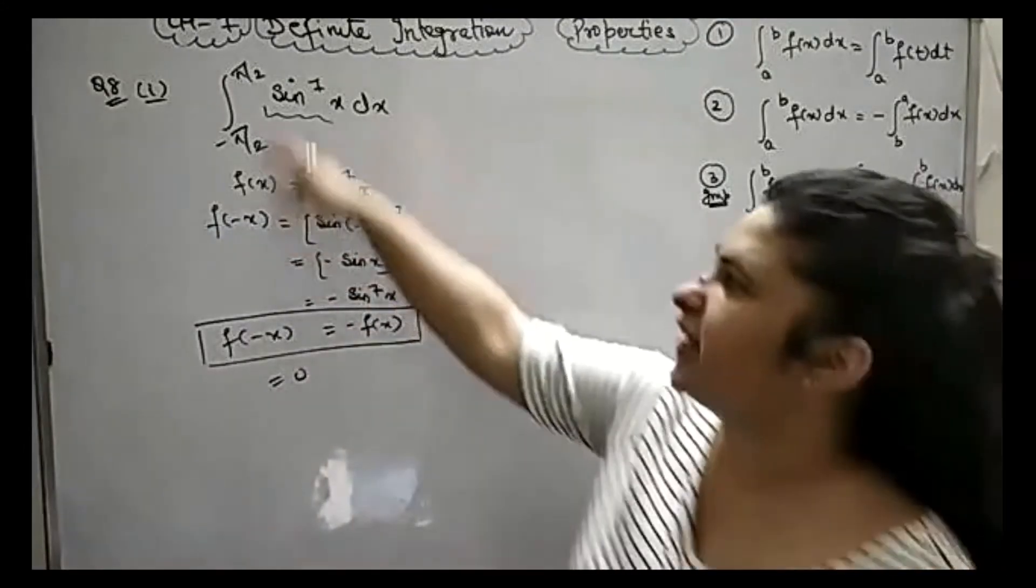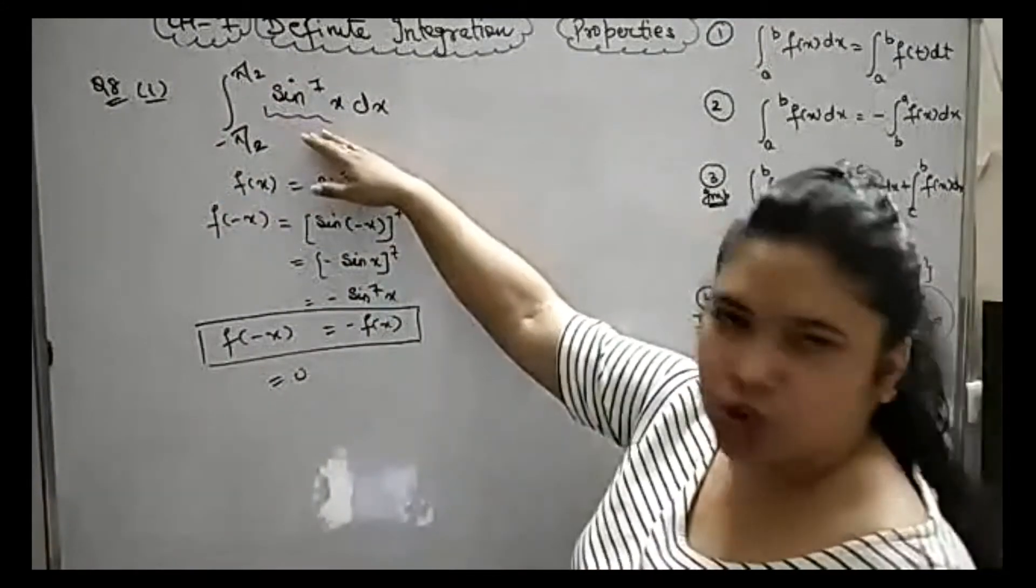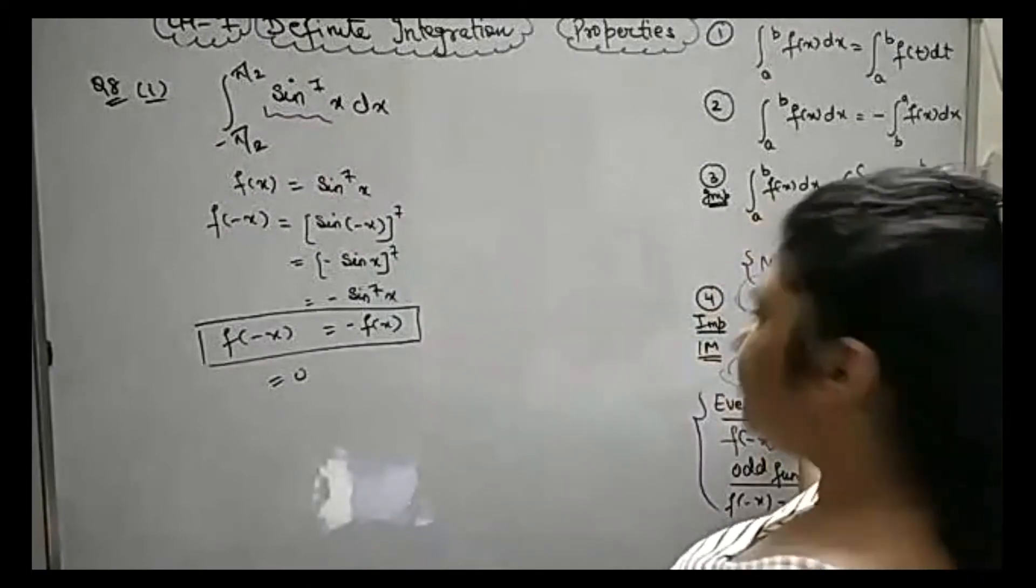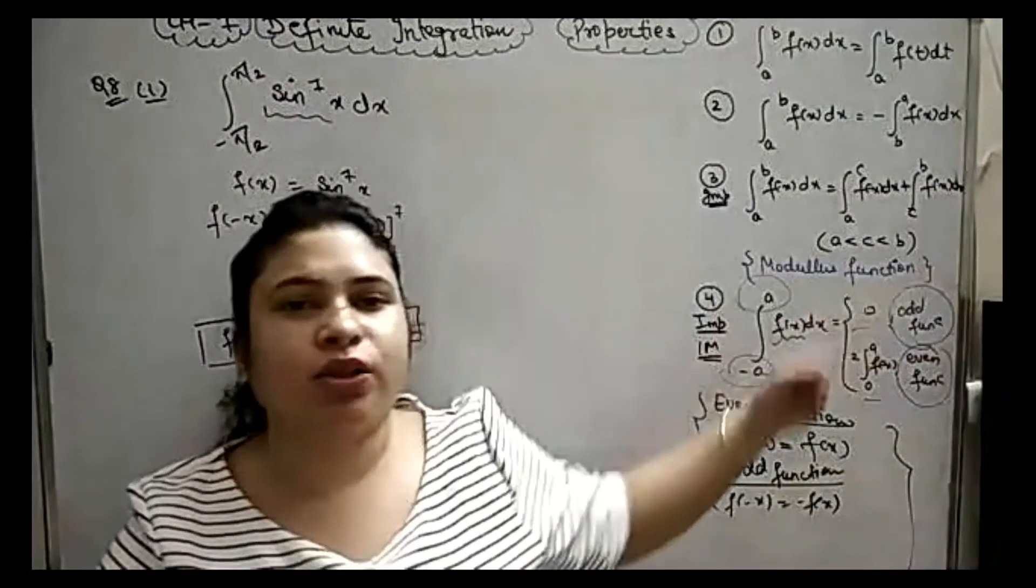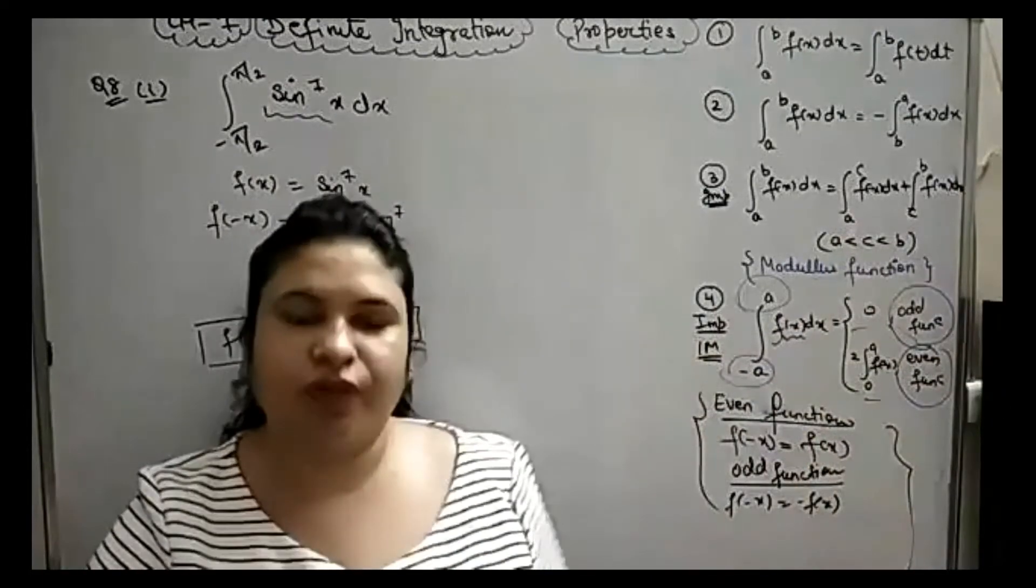So for minus a to a, f(x) dx, you have to decide the odd or even function first. If it is an odd function, the answer is zero.